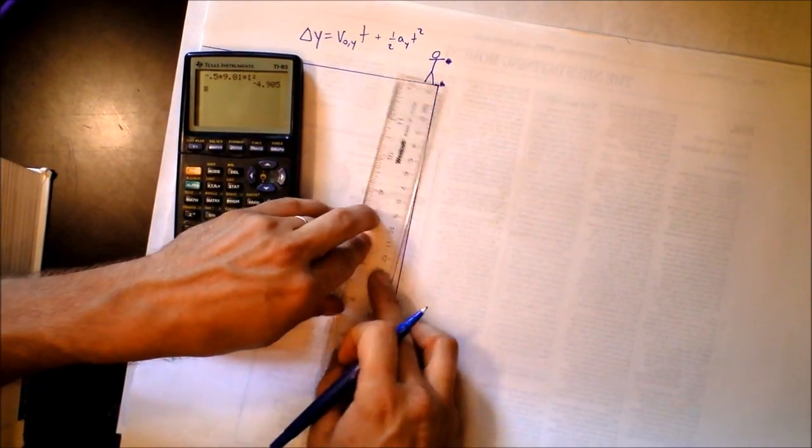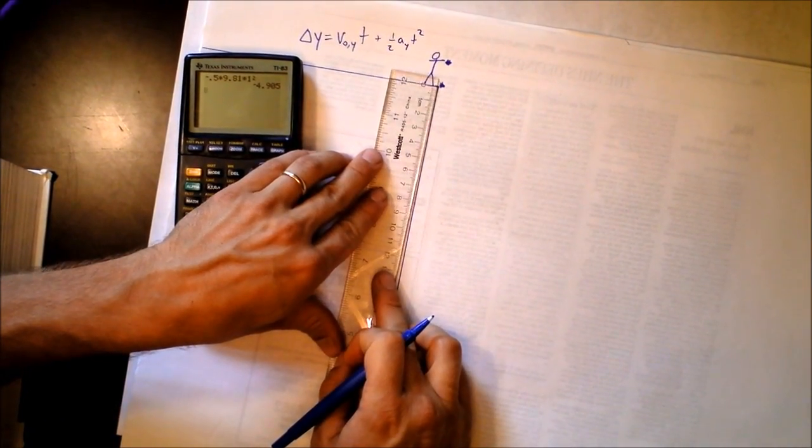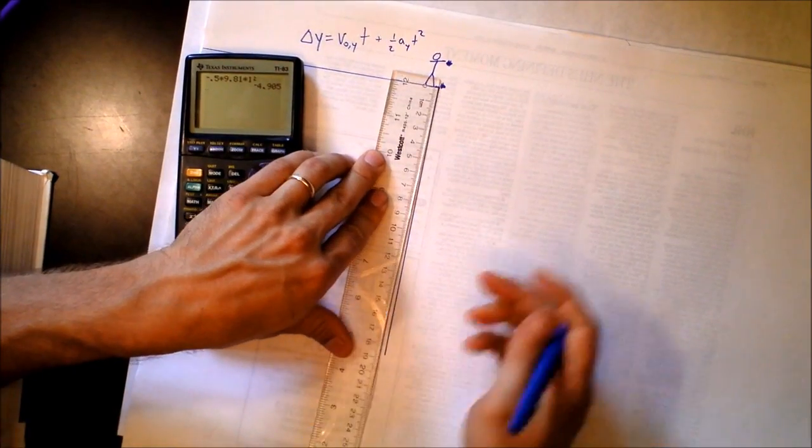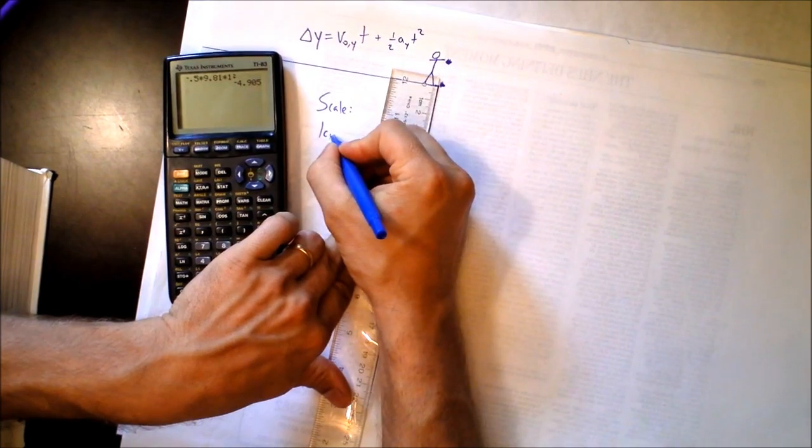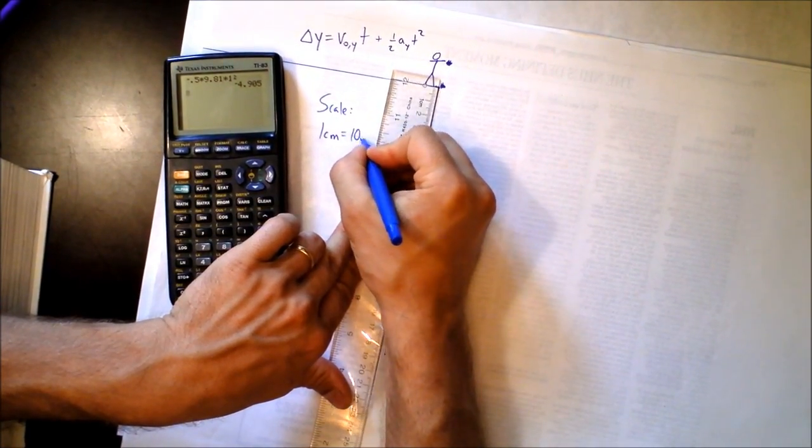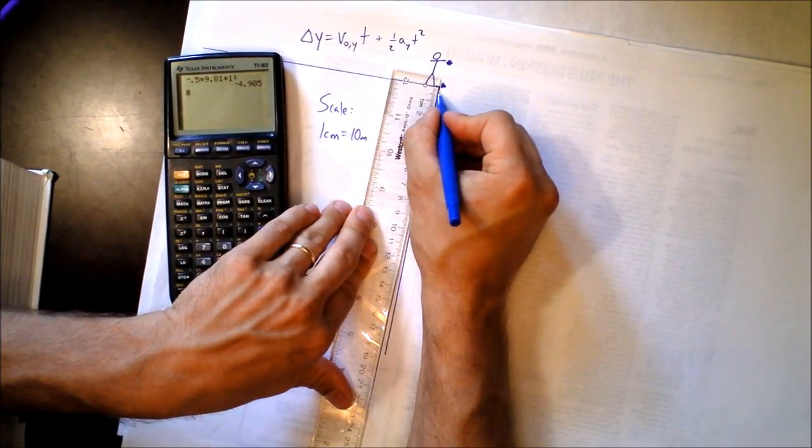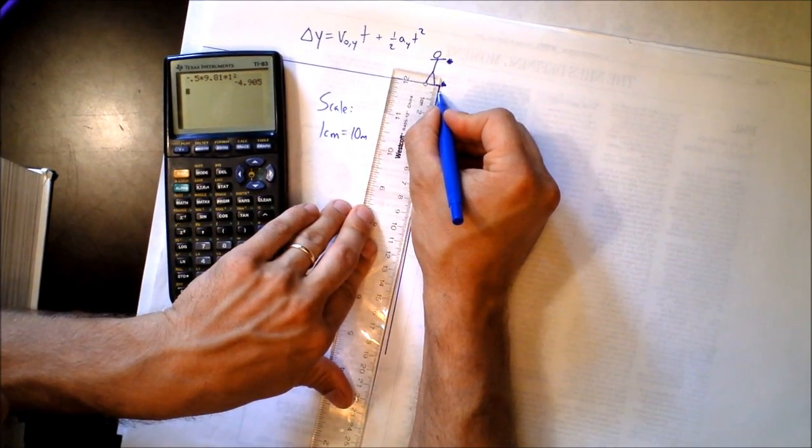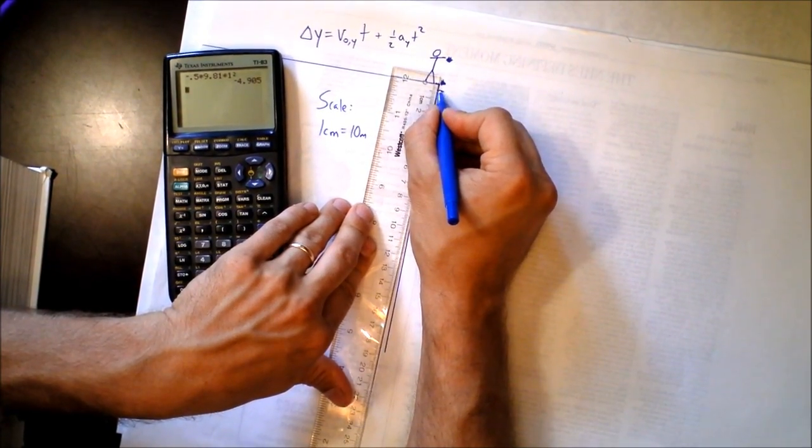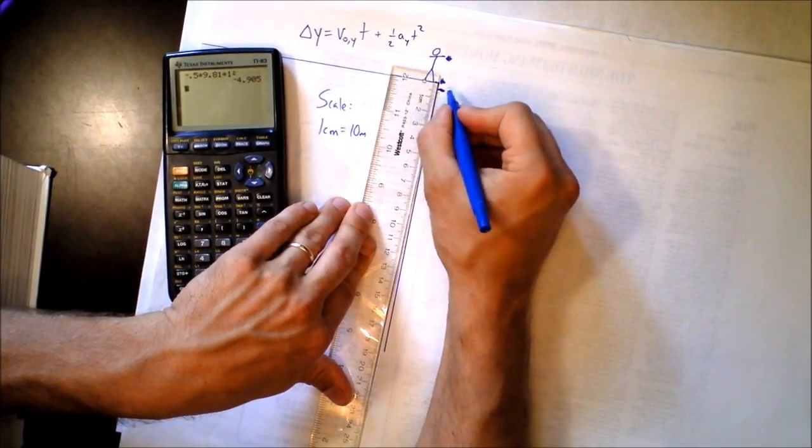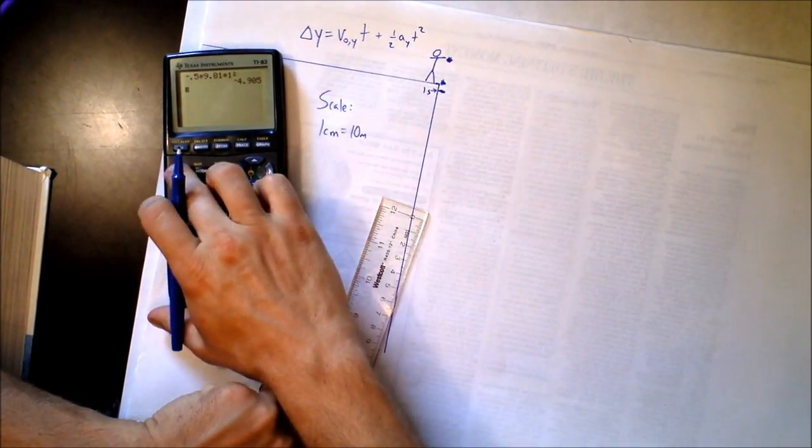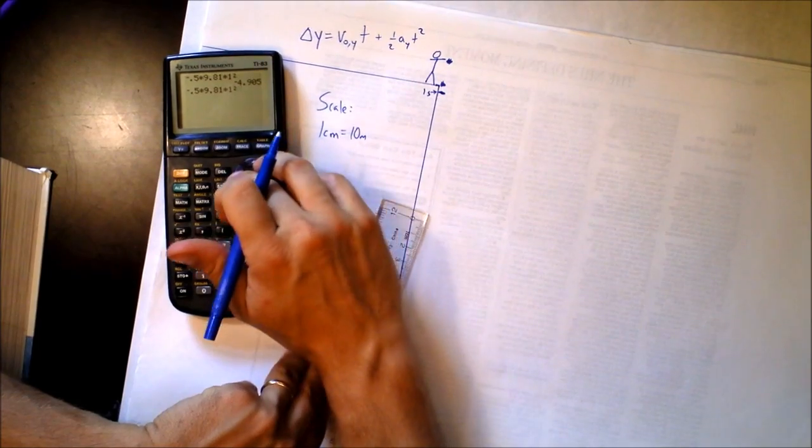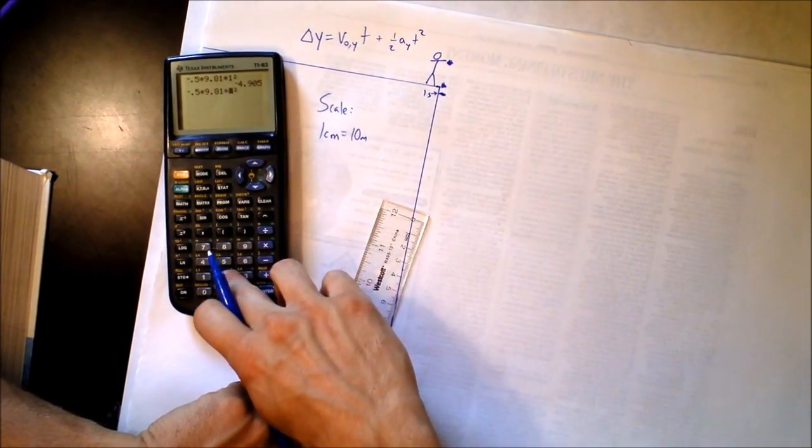So let's say that one centimeter is equal to 10 meters. And so we go down just a little bit, 4.9, we're going to be right there after one second. One second right there. And I'm setting it up like this because it's going to go quite a bit faster as it continues to fall.